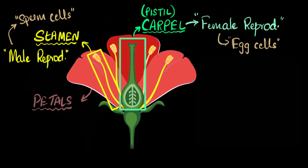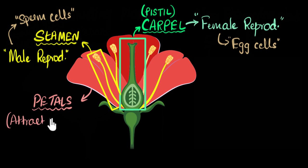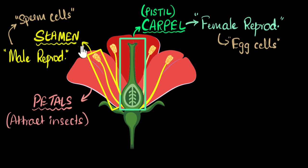The third part is probably the easiest to remember — the petals. Their main job is to make the flower attractive, attracting insects like bees, butterflies, and even birds. As we'll see in future videos, they play a huge role in reproduction through pollination.